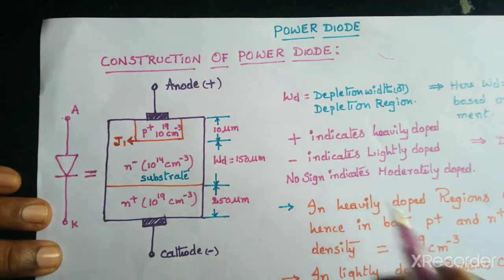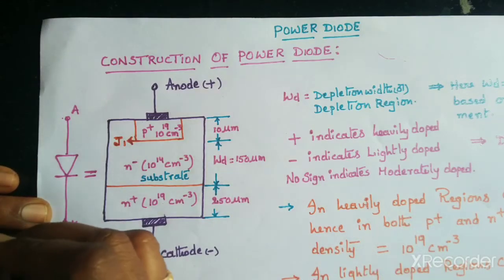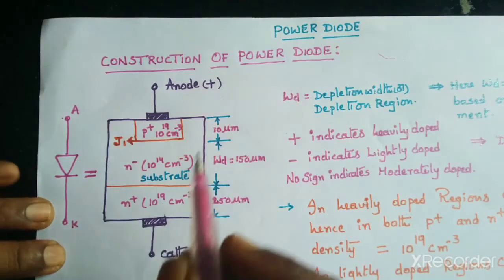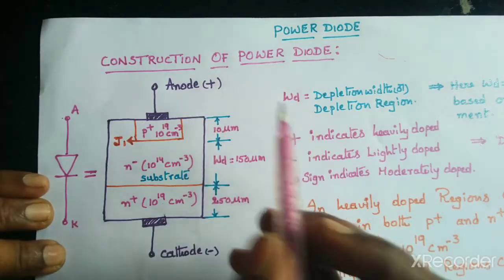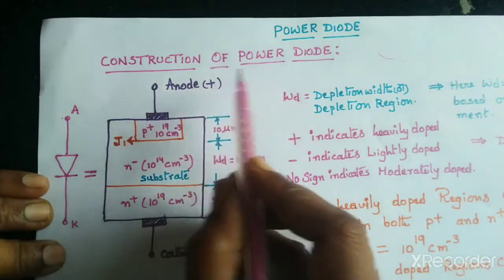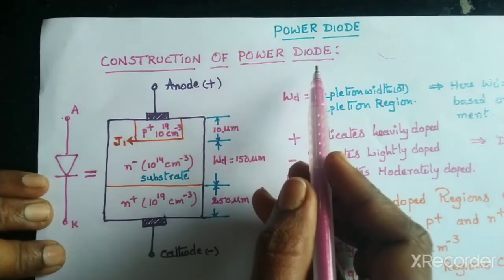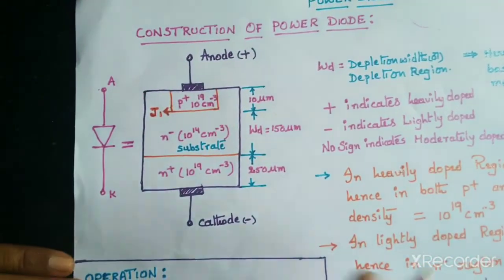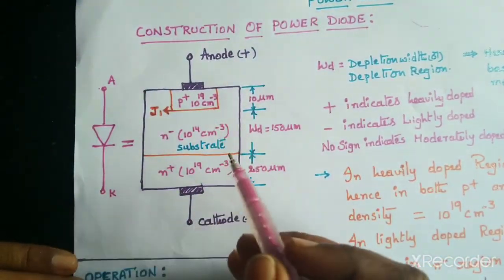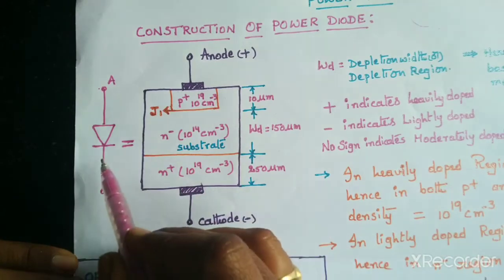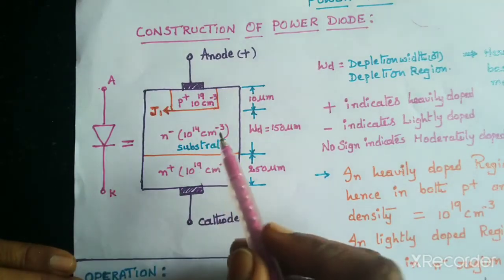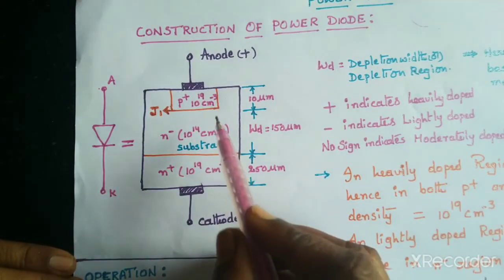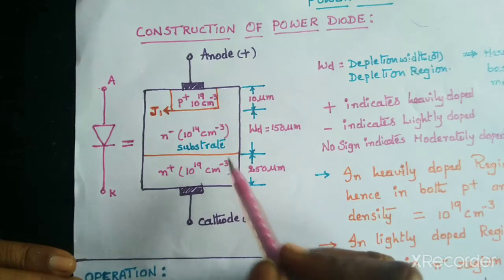Hello students, hi everyone. Today we are going to learn about construction of power diode. Here in this construction, the symbol is similar to a normal diode, but the difference will be there in the construction.